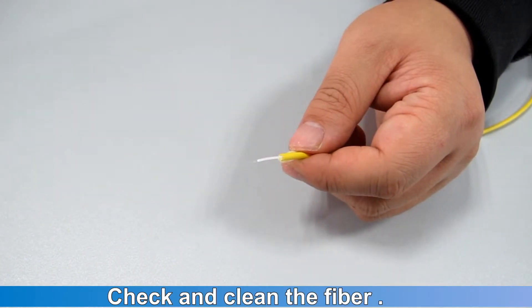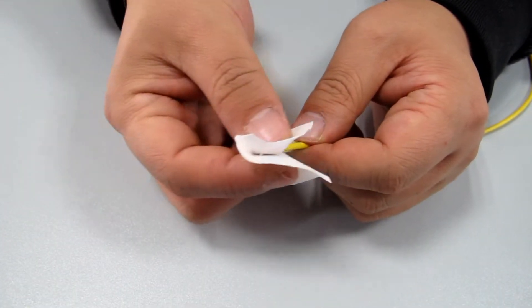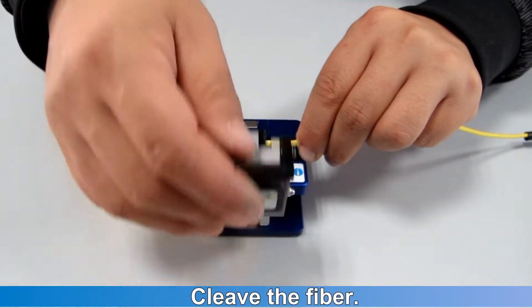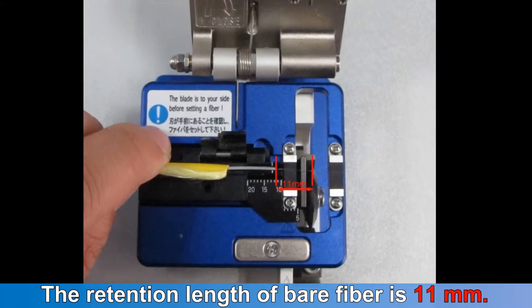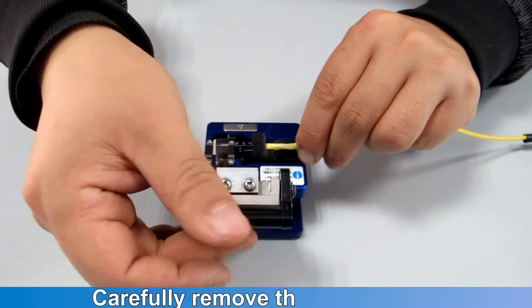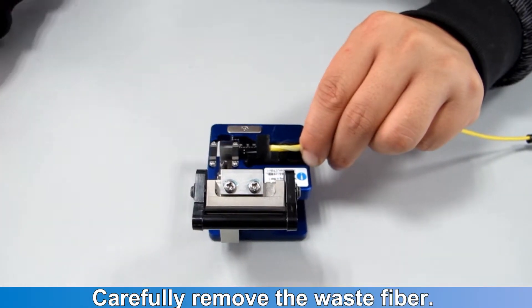Peck and clean the fiber. Cleave the fiber. The retention length of bare fiber is 11 mm. Carefully remove the waste fiber.